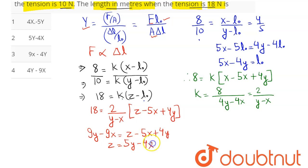So 5Y minus 4X means amongst the 4 option, option number 2 is the correct answer. Hence we can say here option 2 is our answer.